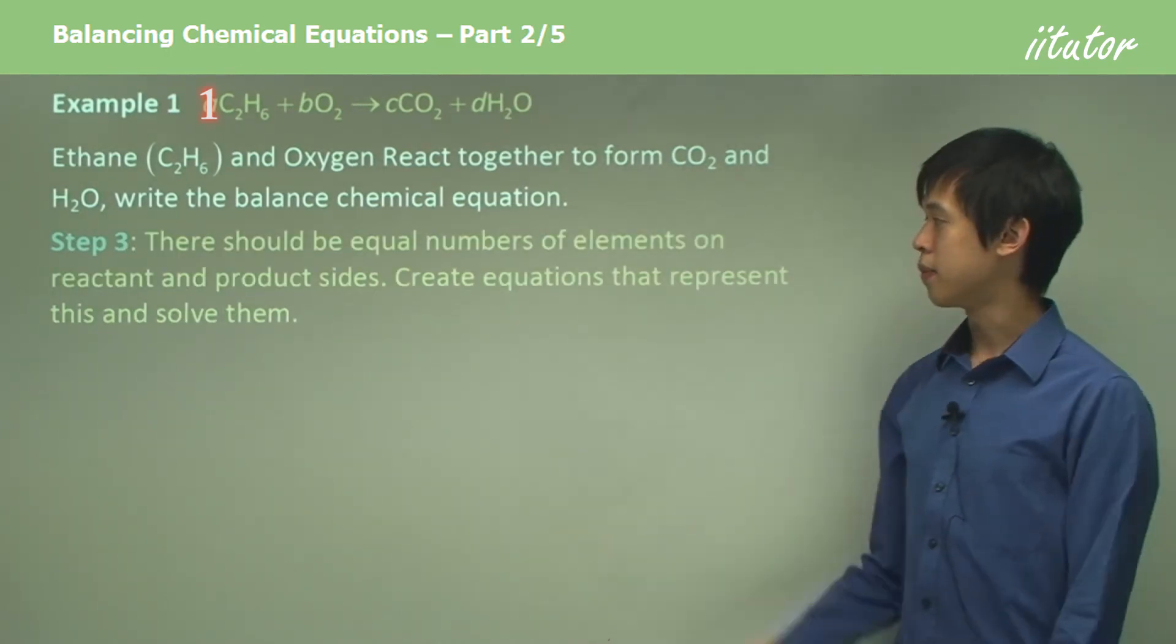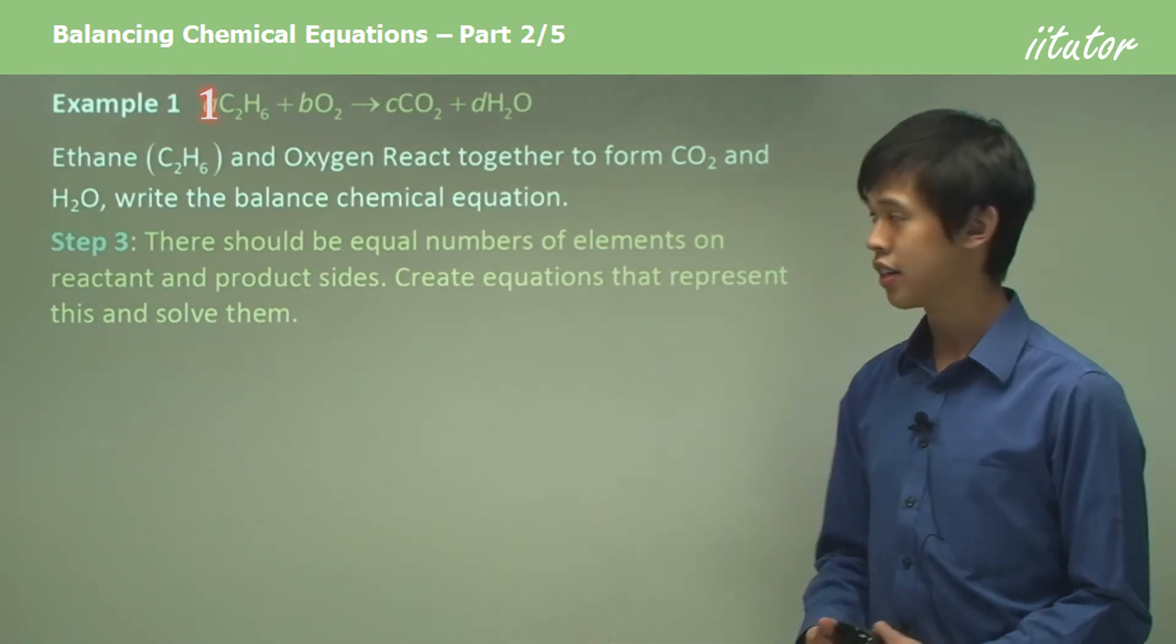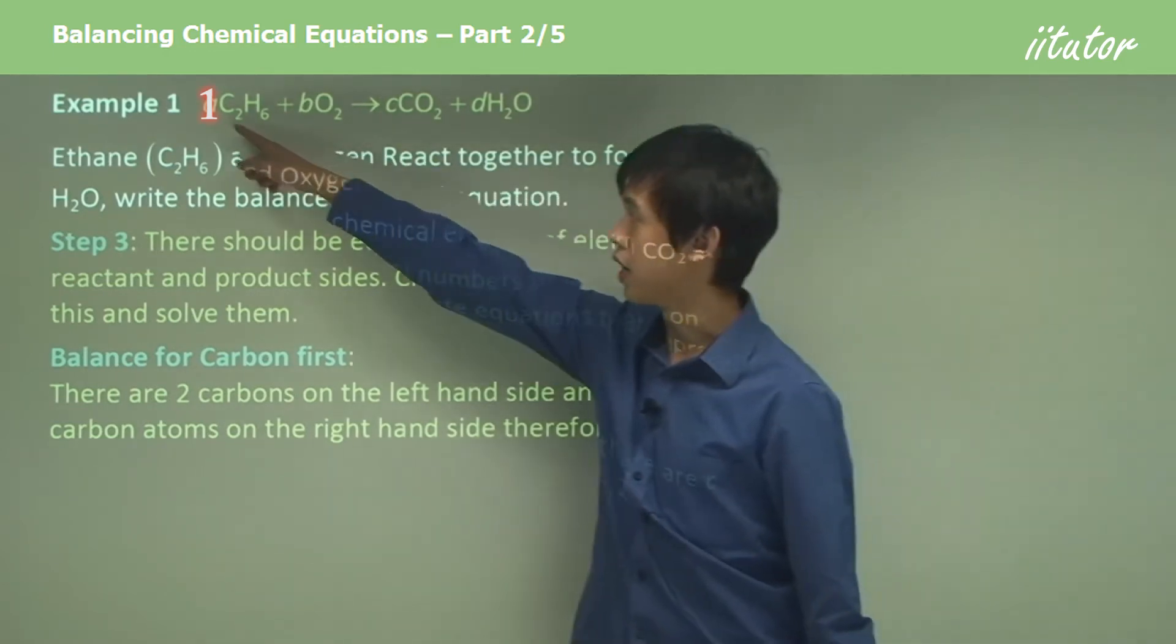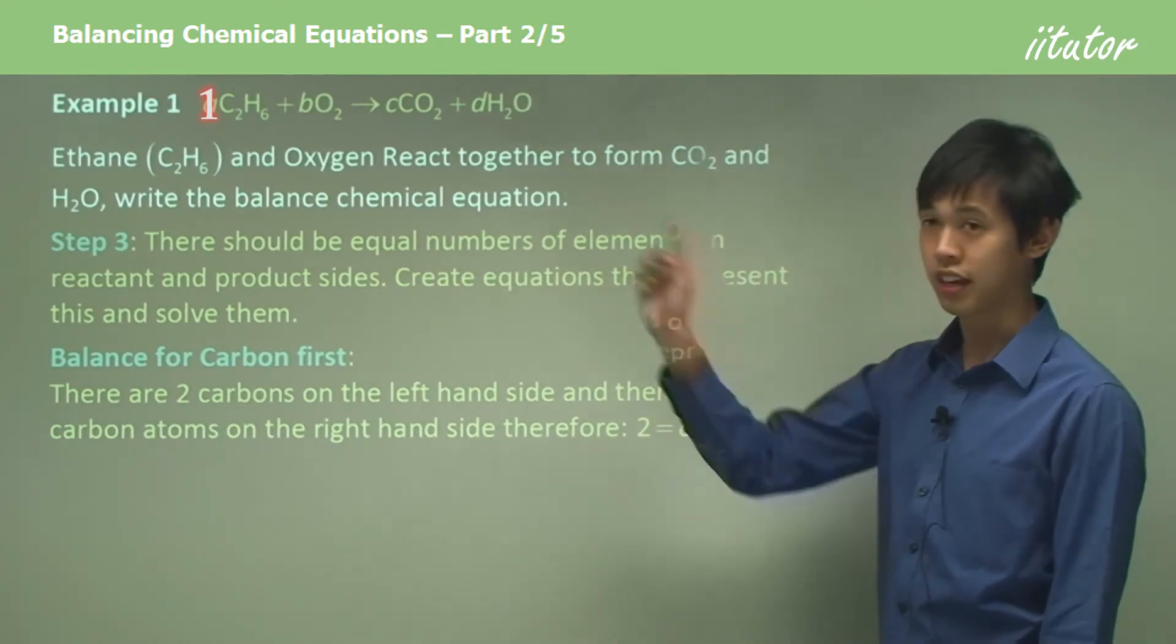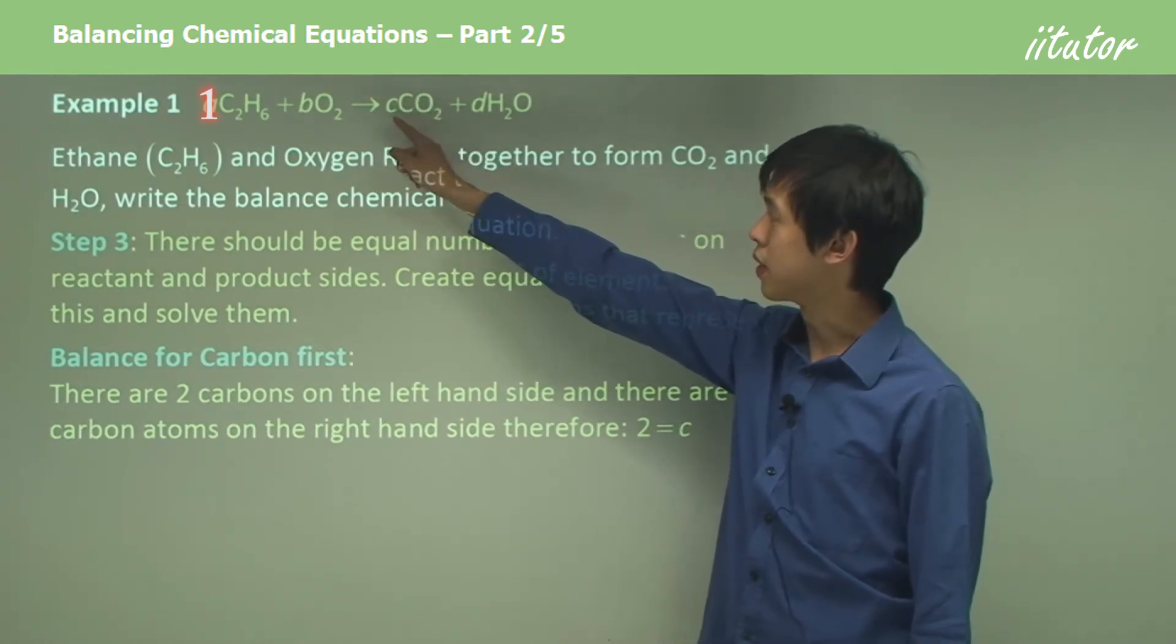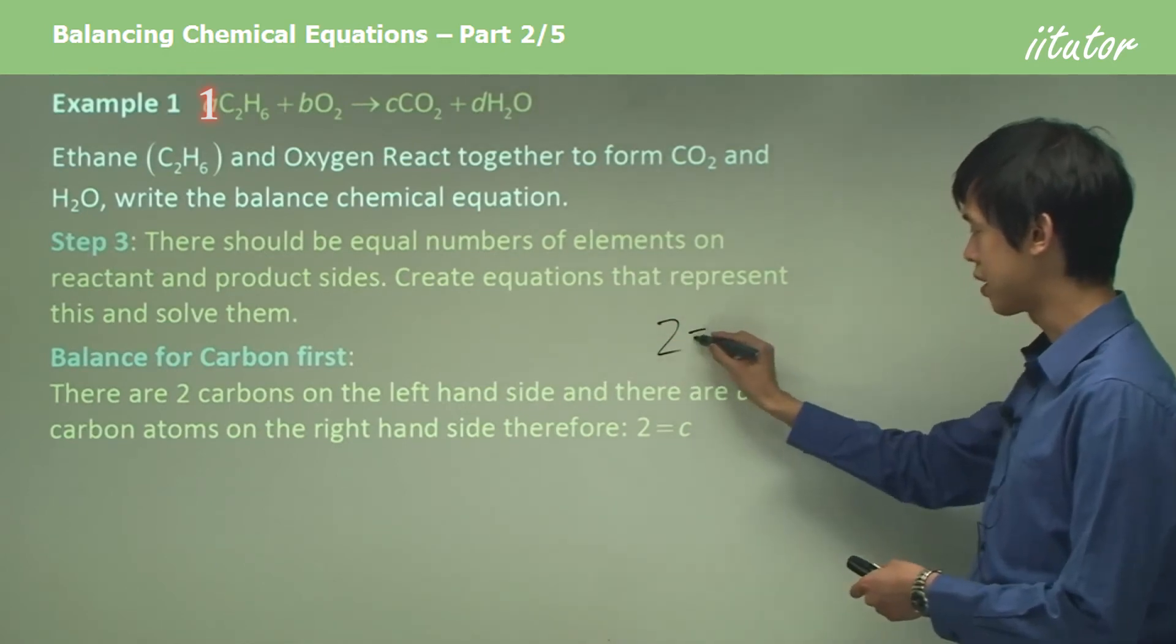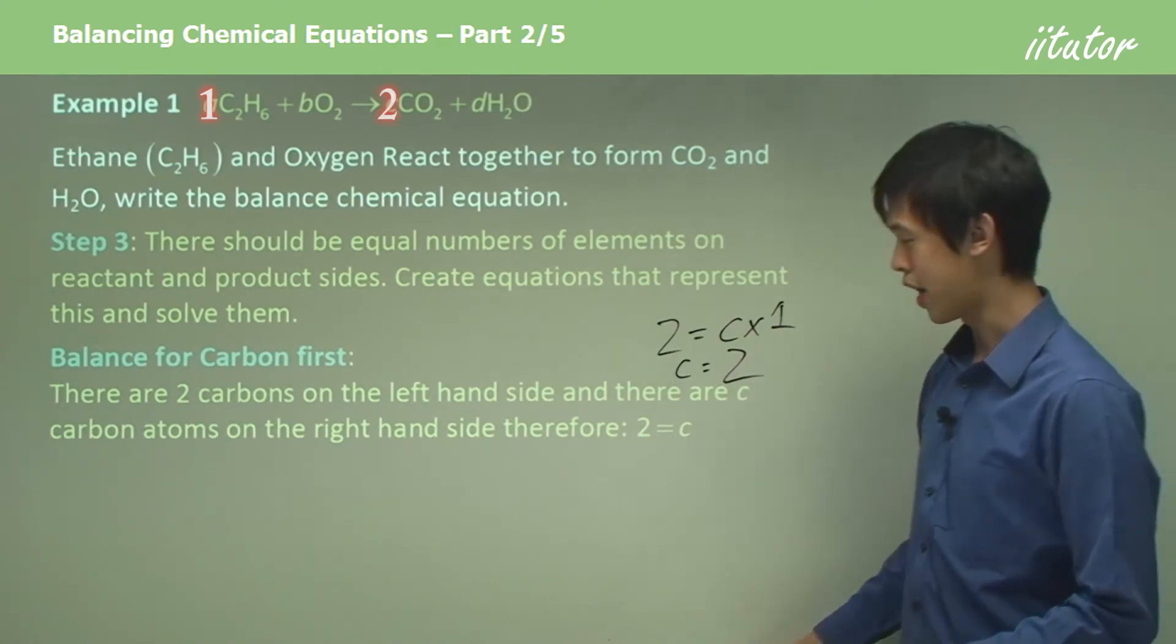Now step three, there should be equal numbers of elements on reactant and product sides. So we create equations that represent this and solve them. If we balance for carbon first, there are two carbons on the left hand side, right? Because remember A is 1. We always set A to 1. So there's 2 on the left hand side. But on the right hand side, we have C times 1. So we need to make sure that C times 1 is the same as 2. So what we say is 2 on the left hand side equals C times 1. So C has to equal 2. Simple algebra there.